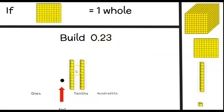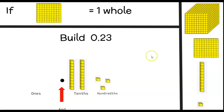Then I think about my hundredths place. One hundred divided by one hundred gives me one, so I use my ones cube — and I would need three of those. That gives me zero and twenty-three hundredths.